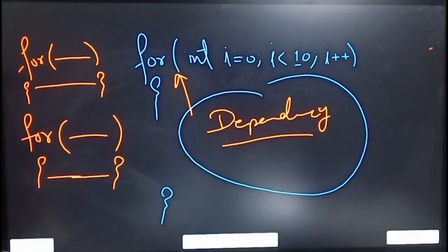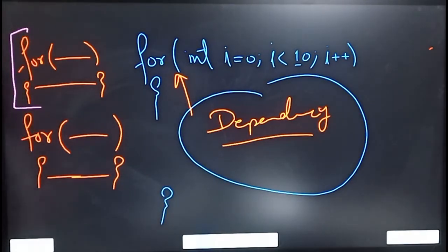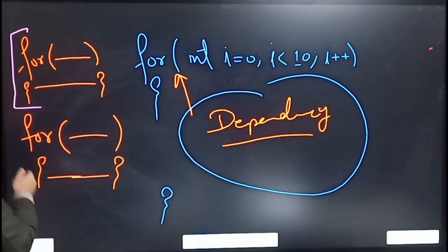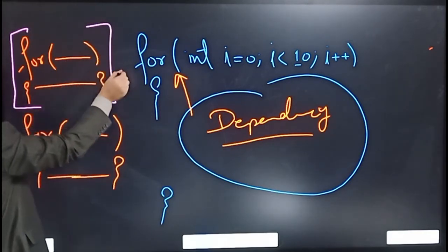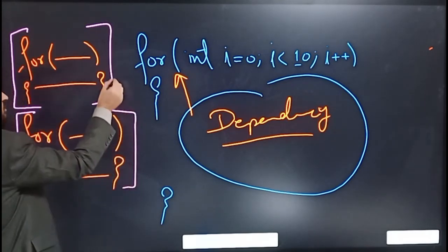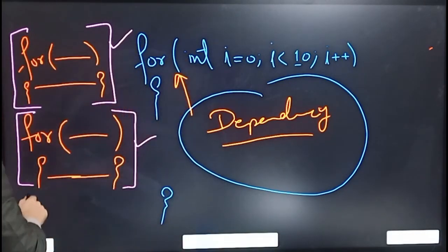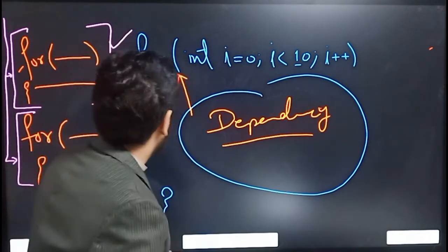When a loop has a body with all its operations, it will execute and complete all its iterations. Then, when that loop terminates, the execution of the next loop will start. So these two loops are independent of each other.